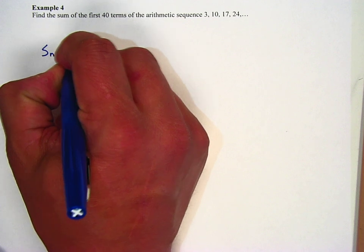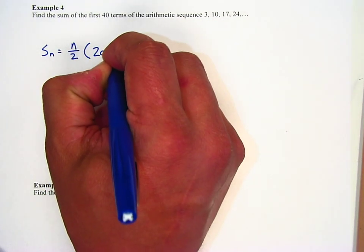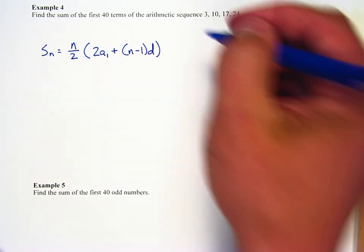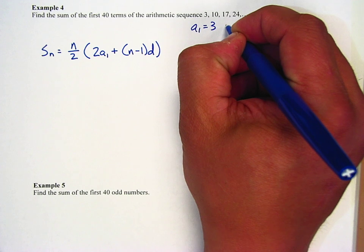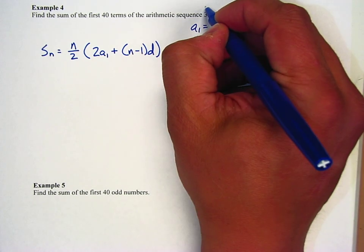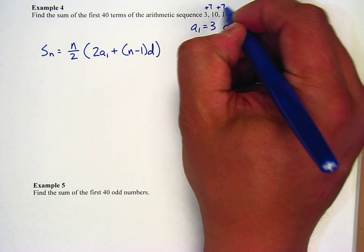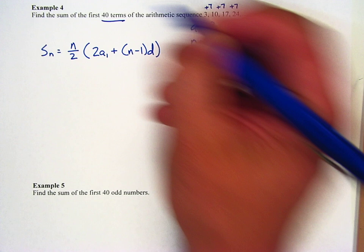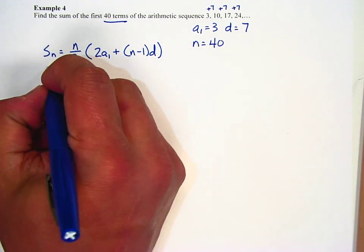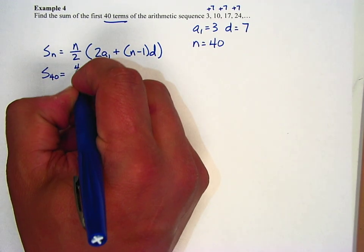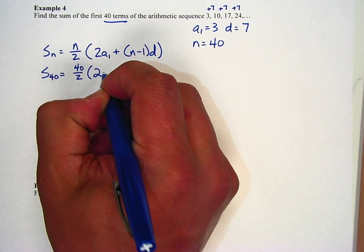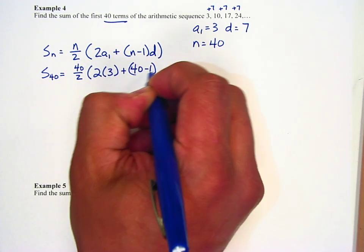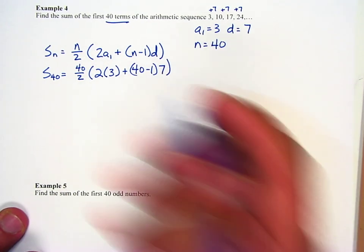Do I know the first term? Sure, it's 3. Do I know the common difference? Sure, that's 7 — I add 7 each time. Do I know how many terms there are? Yes, the first 40 terms. So: S₄₀ = (40/2)(2×3 + (40−1)×7).